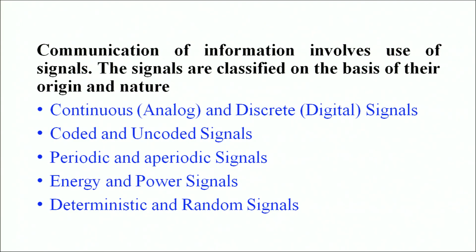Let's look at the different types of signals used for the communication process. Whenever we want to communicate information, it involves the use of signals. Signals are classified on the basis of their origin and nature. To classify them, we have continuous or analog signals and discrete or digital signals.